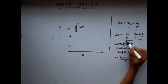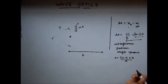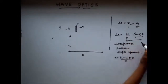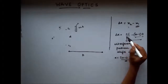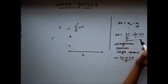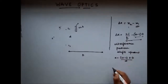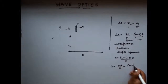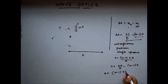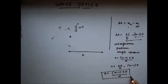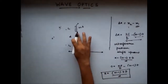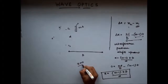Finally, this path difference decreases. For constructive interference, this should be equal to k·λ. If we put k equals to zero, we see that the first maxima occurs at this distance. So the first maxima without this glass slab was occurring at x equals to zero, and now the first maxima has shifted to this new position.